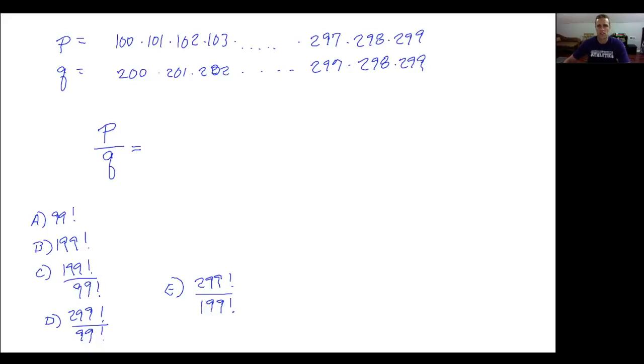All right and so Felice you were saying that you kind of did a wouldn't it be nice if and that's a great way to go, like what if you only were doing like P equals 10, 11, 12 to like 29 for example and Q is 20, 21, 22 all the way up to 29. That's a good way to think, wouldn't it be nice if is a great kind of way to think.